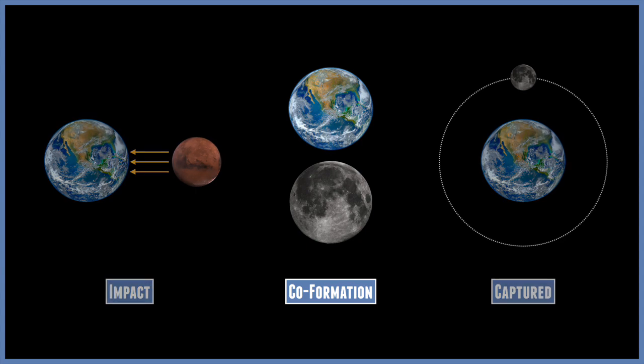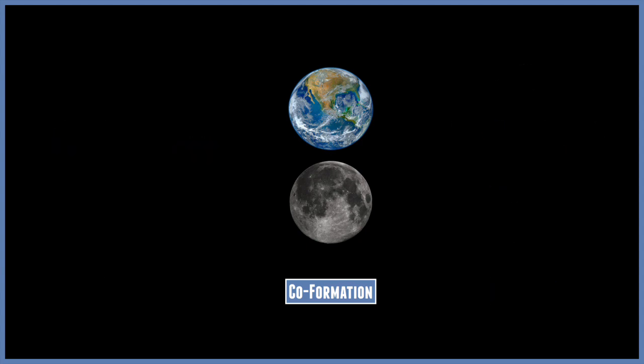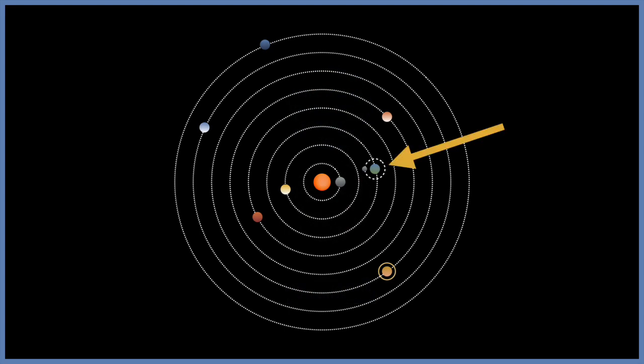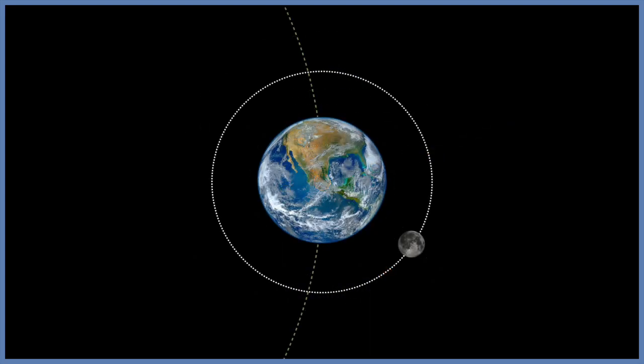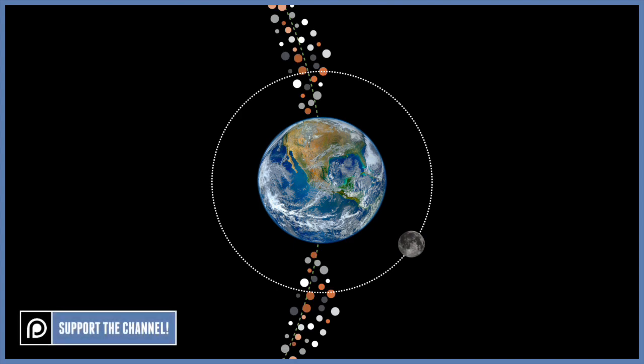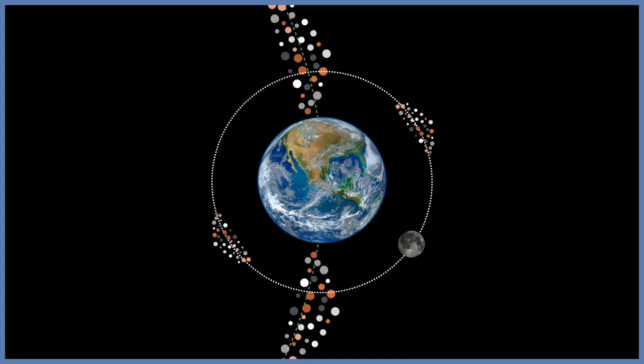The second one is the co-formation theory. Moons can often form at the same time as their parent planet. The material in the early solar system would have drawn together through gravity. The formation of the moon would have occurred at the same time as the formation of the Earth, and because it would have formed in the same place, it would have been made of the same material. This gives a good reason why the moon has a very similar composition to our planet, and it would explain the moon's location.